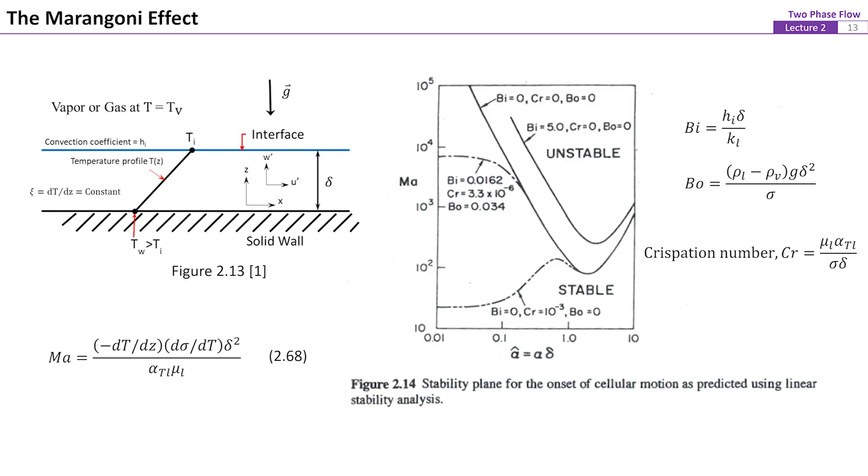For a thin liquid layer on a hot solid surface as shown on figure 13, the stability of the film can be analyzed by applying a standard linear stability analysis. Figure 14 shows a result of the linear stability analysis. The vertical axis is the Marangoni number as defined by equation 68.